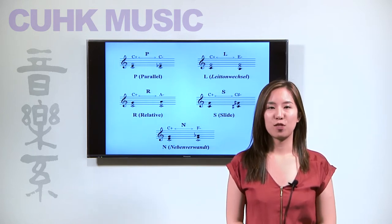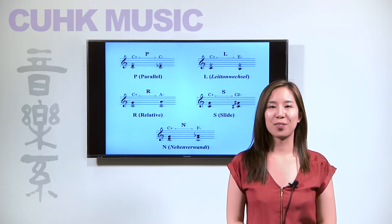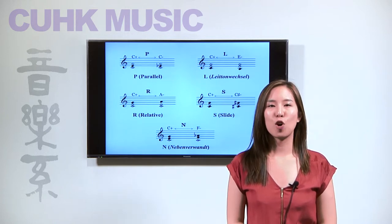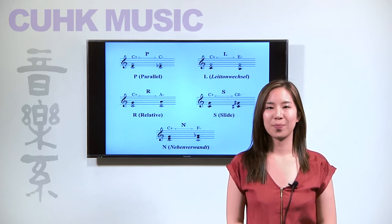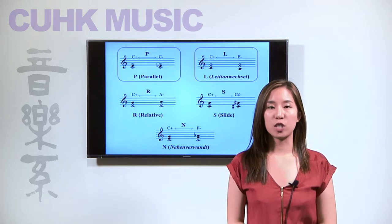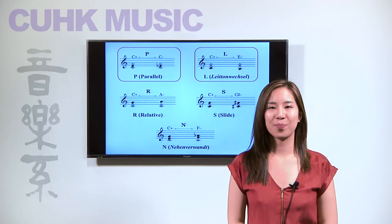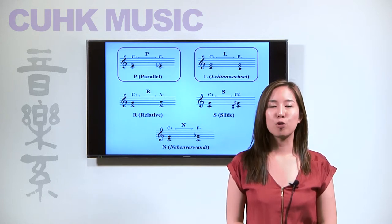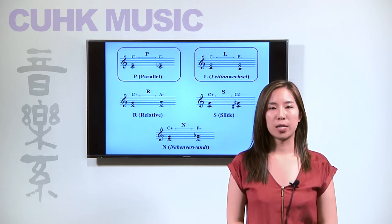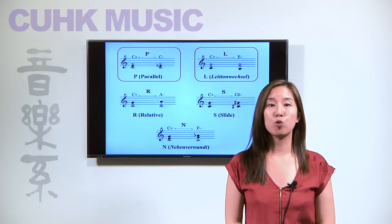These five triadic transformations can be used separately or used together to form a transformation chain. Let us take the triadic transformations P and L to illustrate such a chain. In the example shown on the screen, the music alternates between these two transformations.